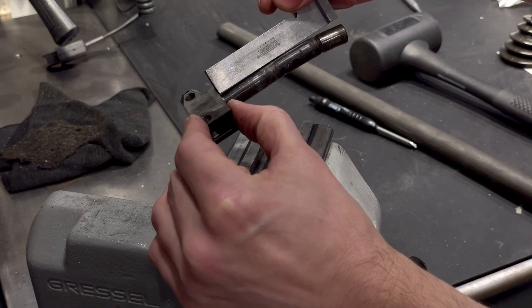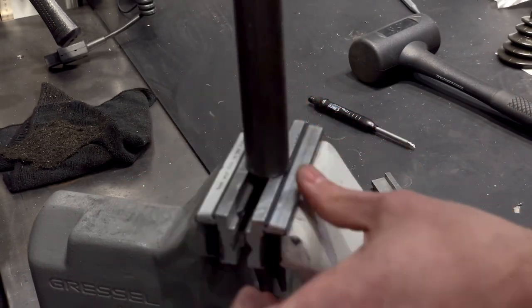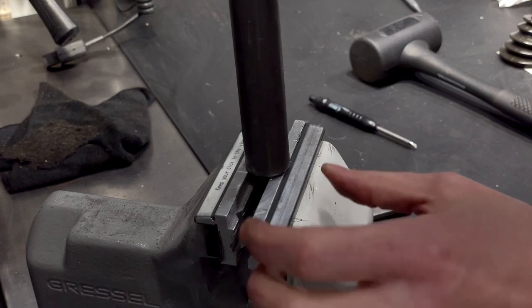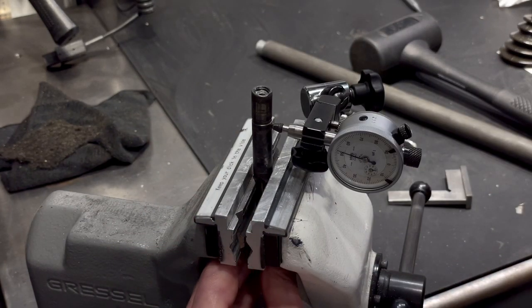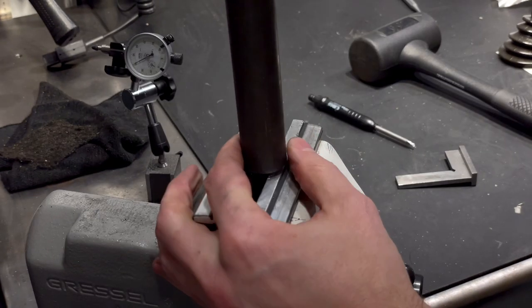At some point the remaining angle in the part gets so small that it gets difficult to see in which direction to push it. So I indicate the high spot with an indicator and then push in the opposite direction.